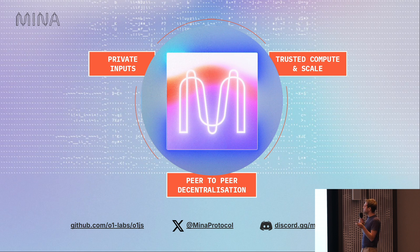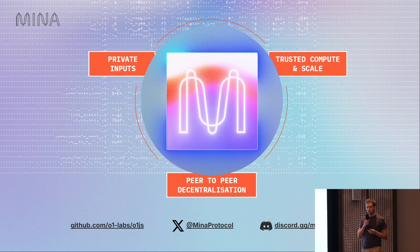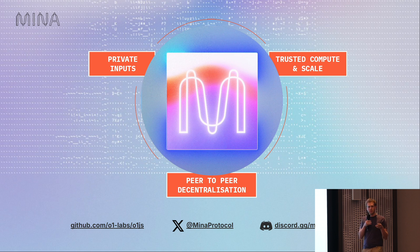And that's it. So Mina has these different properties: private inputs, trusted compute and scale, and this decentralization property. Check it out if you're interested. We're hard at work building a lot of the core infrastructure and features on top of it, but a lot of it is also working today, so you can try it and check it out. And that's it for the main talk, but I can take any questions. Thanks.